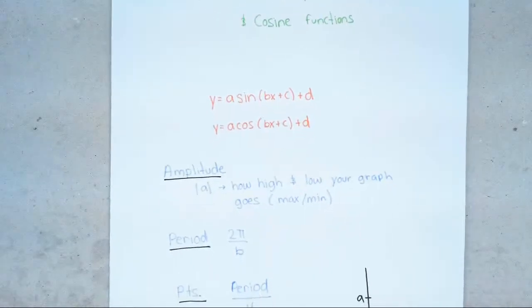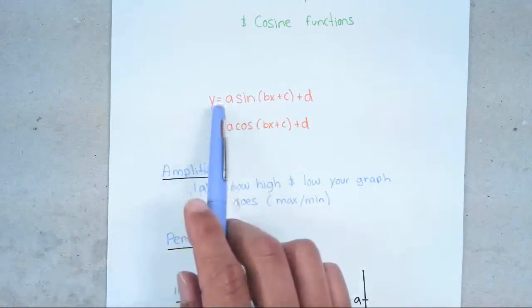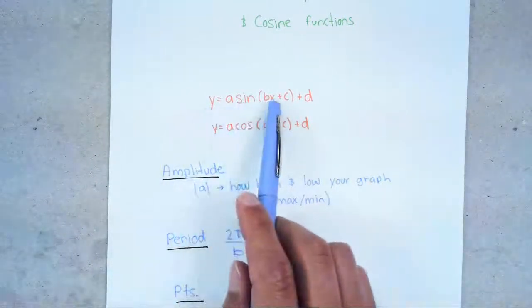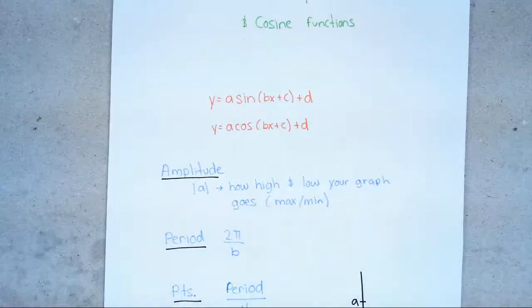What we're going to first do is focus on what happens when there's an A, what happens when there's a Bx and a C, and what happens when there's a D.